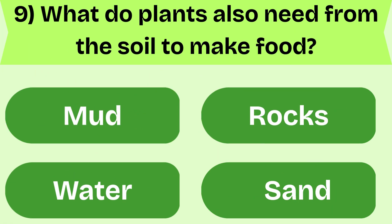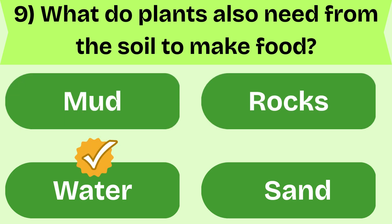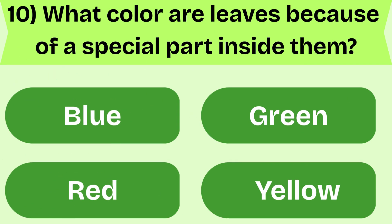What do plants also need from the soil to make food? Water. That's correct. Try the next one. What color are leaves because of a special part inside them? Green. Amazing. Here comes the next one.